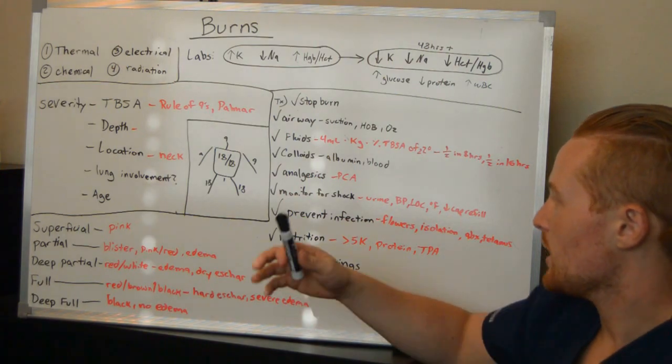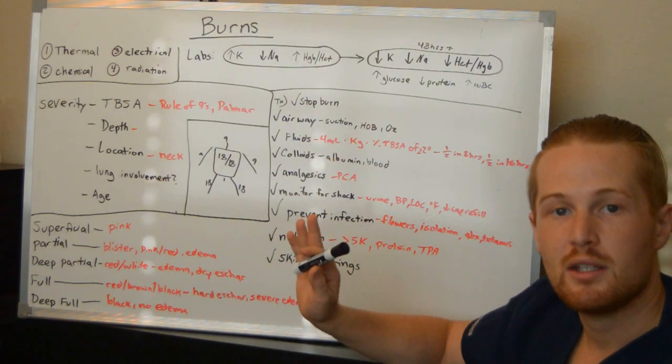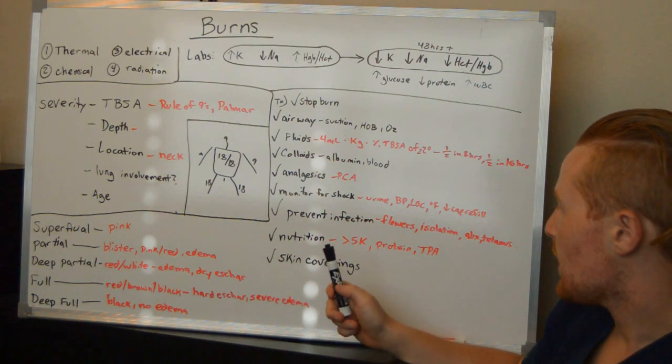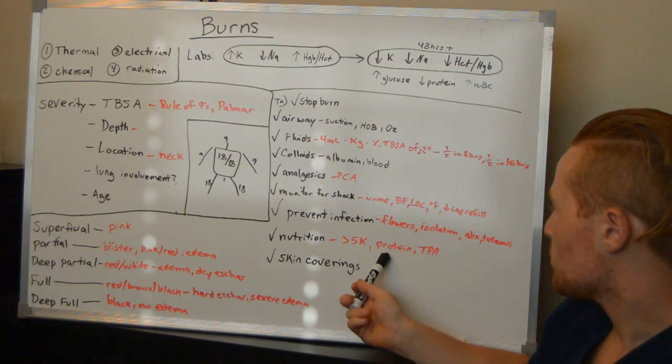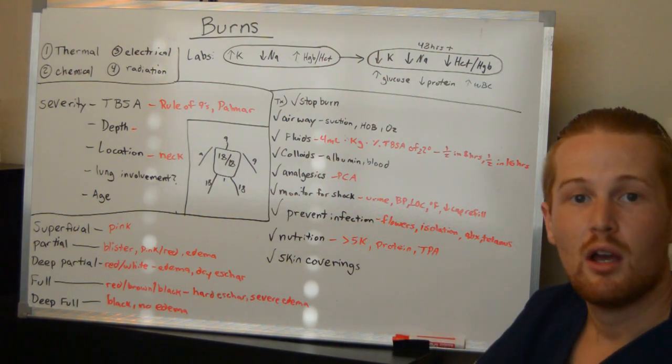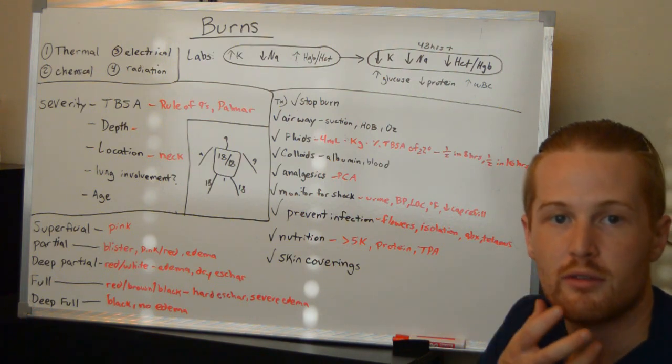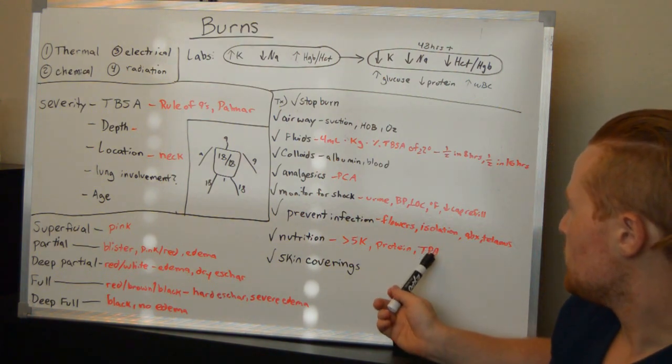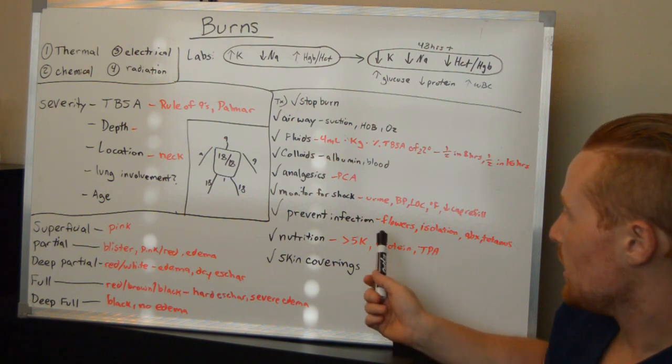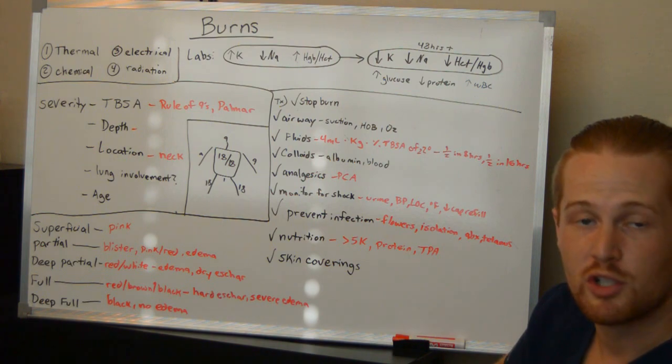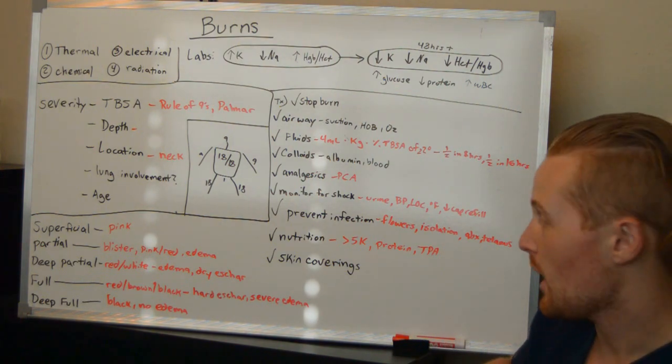Nutrition is going to be a big deal. They got a big burn and they need to make sure that they can regrow the skin and the proteins and the muscles. So they're going to need upwards of 5,000 calories a day with lots of protein. And if there's any, if they're unconscious or they're unable to eat due to damage around the face or the throat, they may need TPN or they may need TPN in conjunction with their oral foods. So TPN is going to be parenteral nutrition, which is going to be going through the IV.